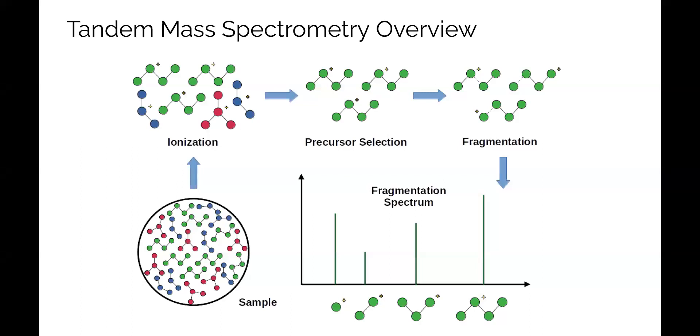Typical tandem mass spectrometry workflows consist of a few core steps illustrated here. First, compounds in the sample are ionized, allowing them to be manipulated with electromagnetic fields. The ions are moved around the instrument and sent to a mass analyzer which records their mass to charge ratio or m over z. These unfragmented ions are called precursors.